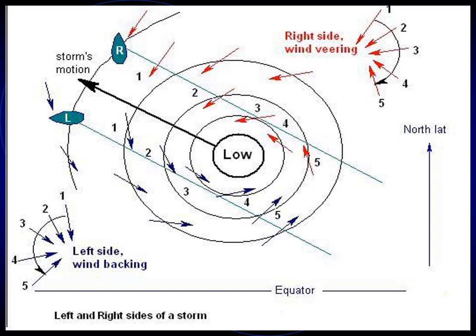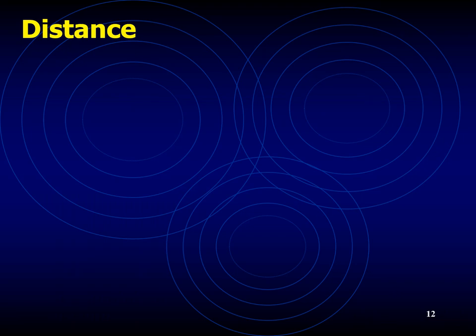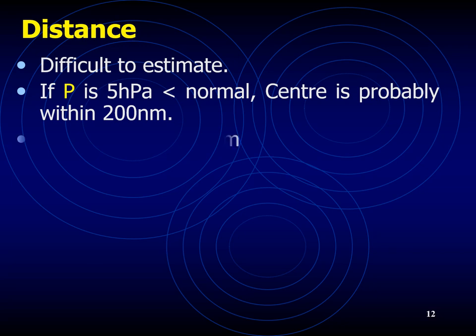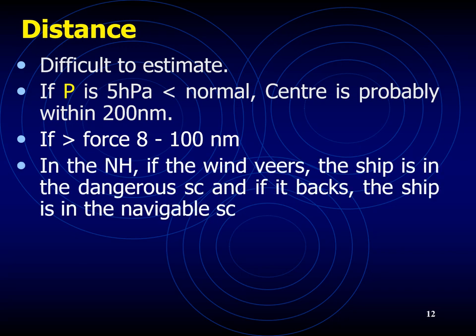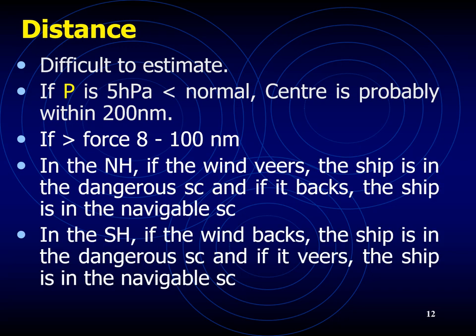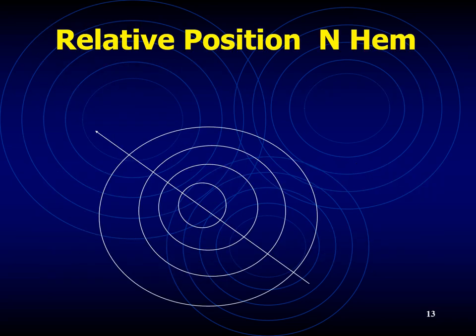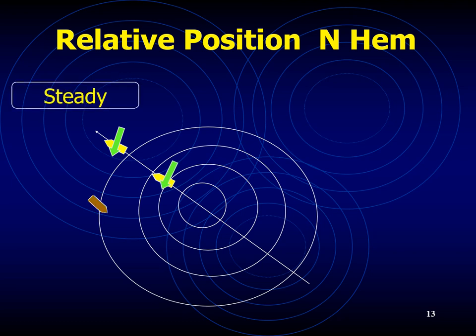Distance is difficult to estimate. If barometric pressure is 5 hectopascals below normal, the TRS is probably within 200 nautical miles. If wind is above Force 8, it is probably within 100 miles. However, these assumptions can give inaccurate results, and all data sources should be consulted to verify distance. The path of the storm can be established by successive observations of the center's position some hours apart. The semicircle the ship is in depends on whether the wind is veering, backing, or remaining steady.